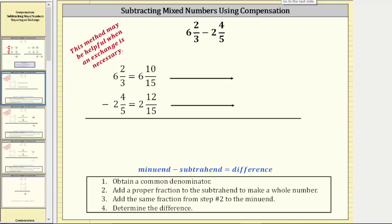The idea behind the compensation method is that it's much easier to subtract a whole number rather than a mixed number. The first step is still to obtain a common denominator — hopefully the least common denominator — which again we already know is equal to 15. The second step is to add a proper fraction to the subtrahend to make a whole number. Here the subtrahend is two and 12-fifteenths. Notice how if we add three-fifteenths, we would have two and 15-fifteenths, which is equal to three. So for step two, we add three-fifteenths to the subtrahend.